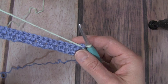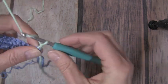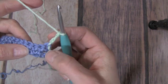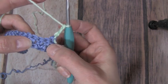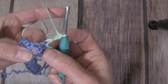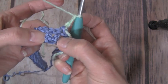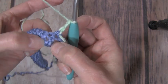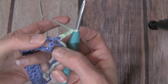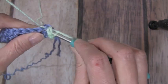For your second row, what you're going to do here is you're going to chain three, which will count as the first double crochet. You're going to then work two double crochets, just like you did on the last row. But we're going to work them in between those two double crochets that were done in the same chain. In this V-part here, this little hole, we're going to work two double crochets.